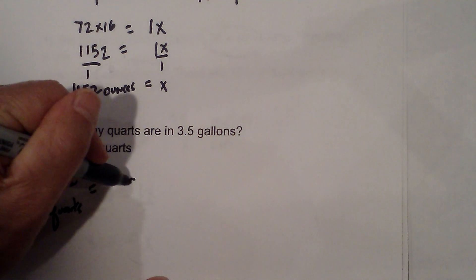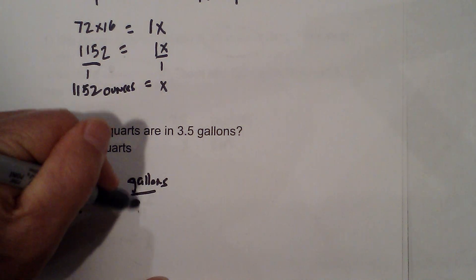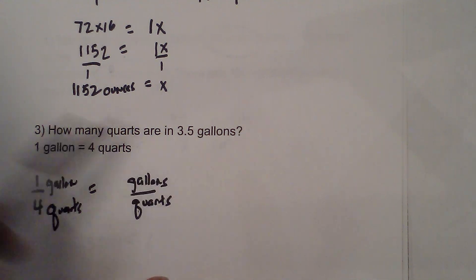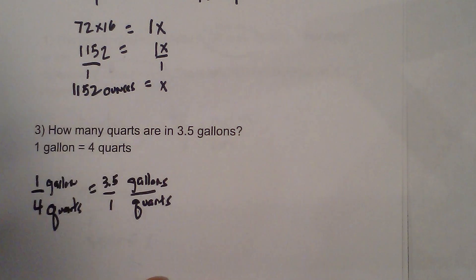I'm going to put gallons here. I'm going to put quarts here. And now I plug in what is given. I have 3.5 gallons over 1. I do a cross product.